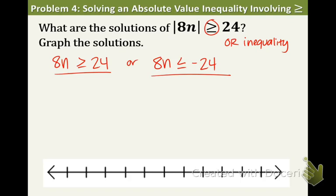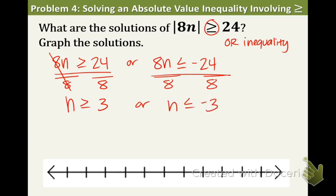So now let's solve these things. We're going to divide by 8 on both sides. n is greater than or equal to 3. Now let's divide by 8 on the other inequality and we're getting negative 3. So now, usually we have the negative number on the left, so let's just rewrite it. They're trading places. And we're ready to graph.